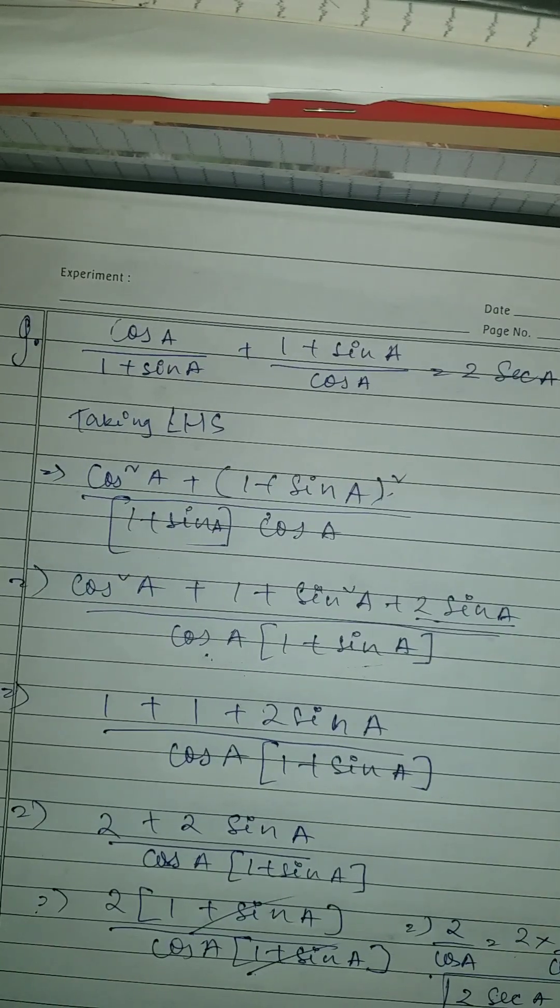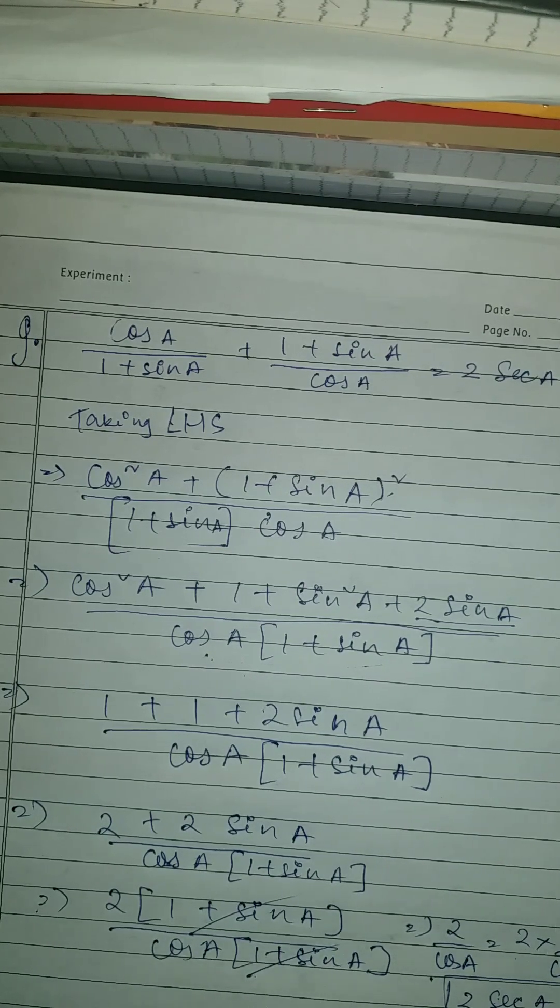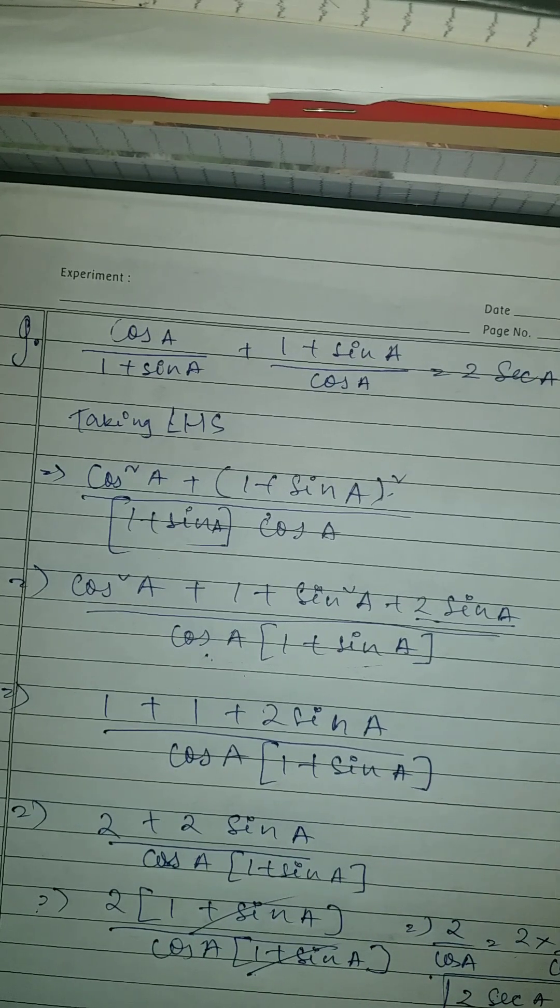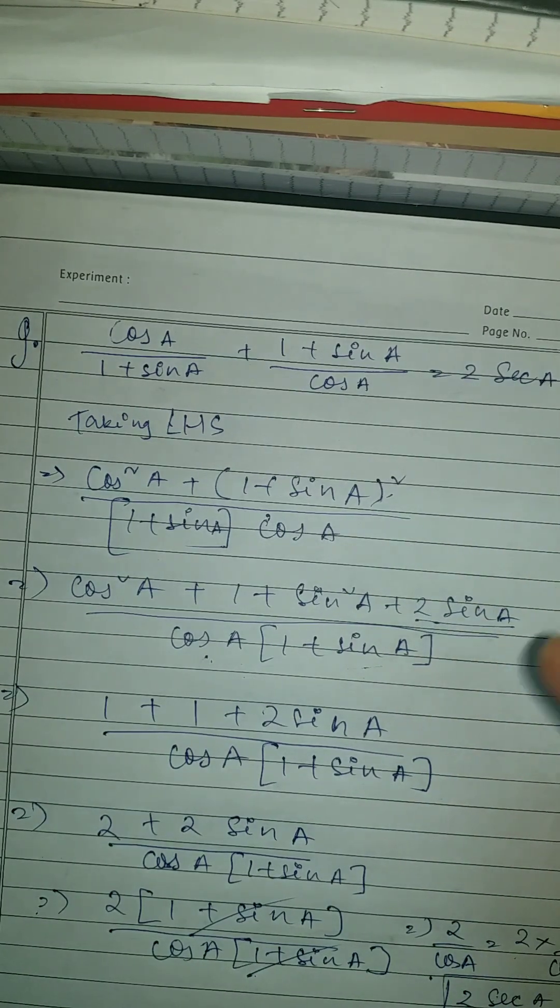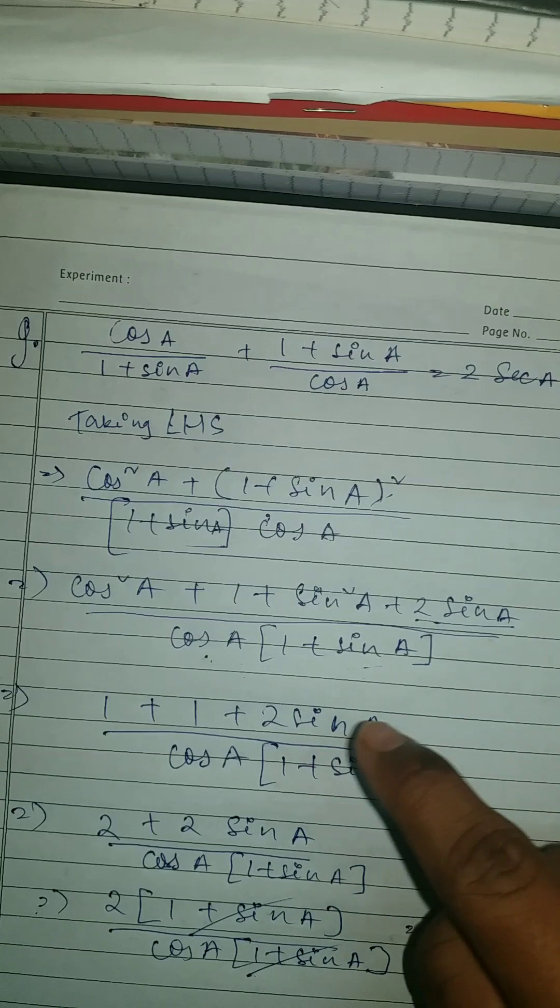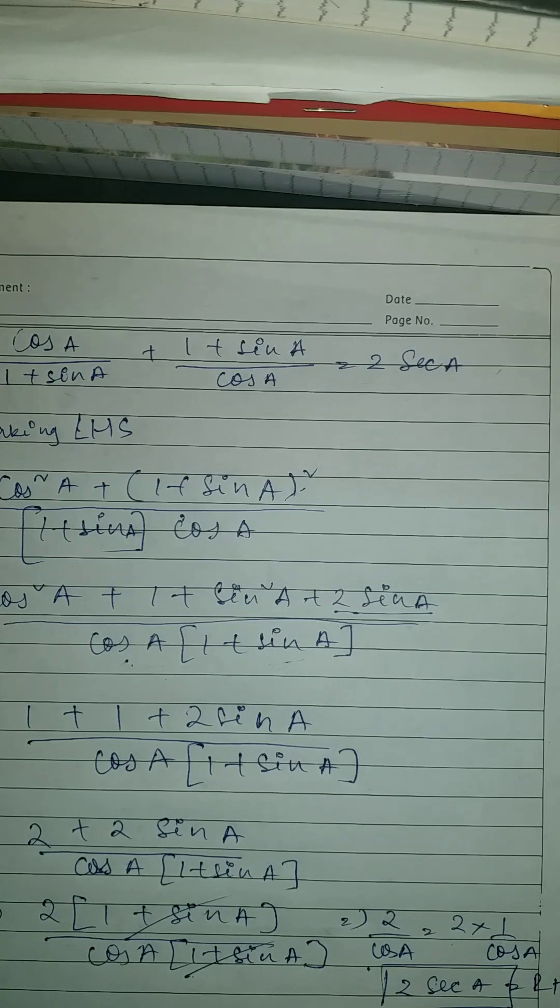So as you can see, this is very simple. Let me tell you again. First what you want to do, we take LHS, you don't have to do anything with denominator. First do cross multiplication, then once you got that, open this bracket. Once you opened it, use the identity cos squared plus sine squared equals 1, then you got 2 plus 2 sine A. Then take common from here, cancel them, and once you cancel them, rewrite this cos A into 1 upon cos A. By doing this we can get the answer which is 2 sec A, which is equal to RHS.